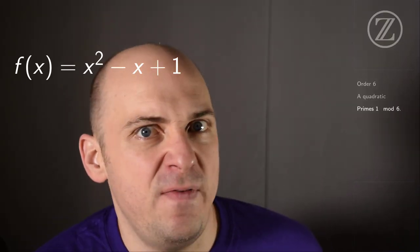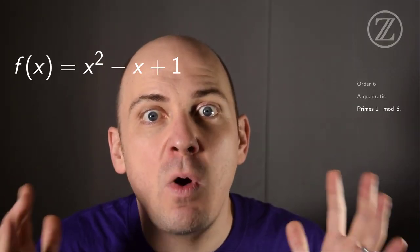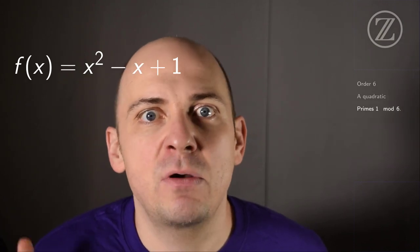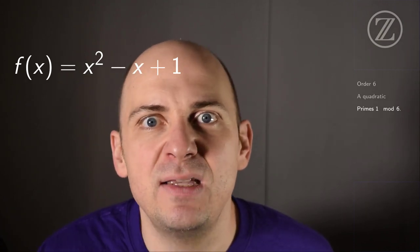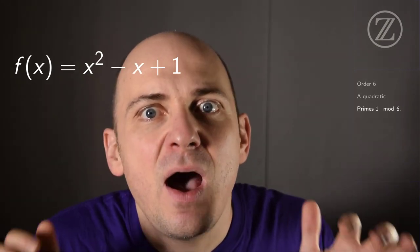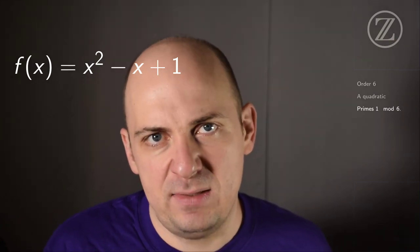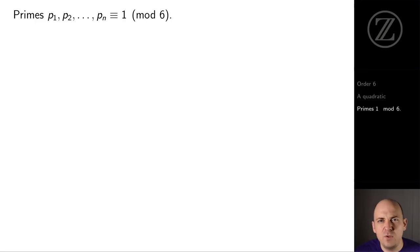The special polynomial f of x equals x squared minus x plus 1 will come to our rescue. The roots of this polynomial are elements of order 6, and we'll use this in a clever way to sneak up on more primes which are 1 mod 6. Let's suppose we have primes p1, p2, pn, which are all primes that are 1 mod 6. Our new goal is to produce a prime not on our list which is also 1 mod 6. In this way, we're going to conclude that there are infinitely many primes that are 1 mod 6, and even better, we'll find out how to produce more such primes.